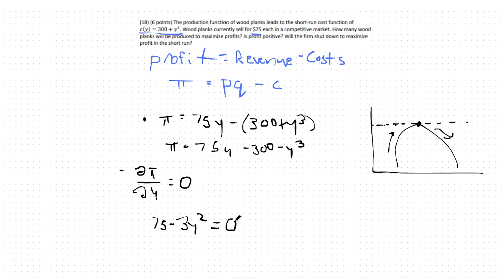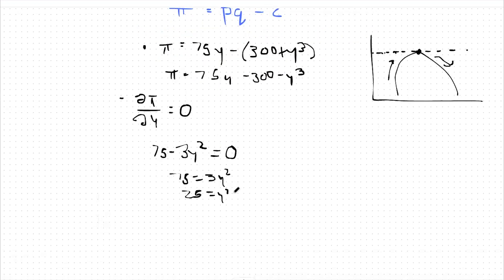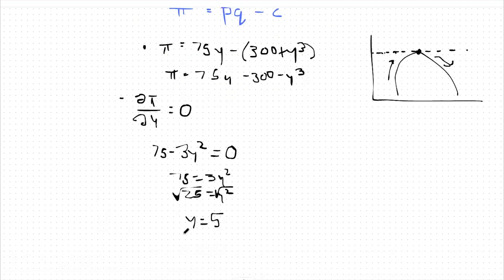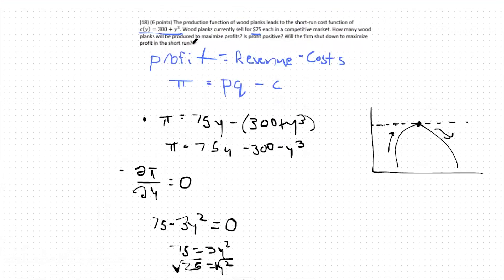So now we have 75 minus 3y squared. We can set that equal to zero as that is our maximizing point. Let's add 3y squared to both sides and say 75 equals 3y squared. So 25 equals y squared. Square root both sides. We get that my output level to maximize profit is 5. We're asking for how many wood planks will be produced to maximize profits. So our first answer would be y equals 5. We should produce 5 wood planks to maximize profits.